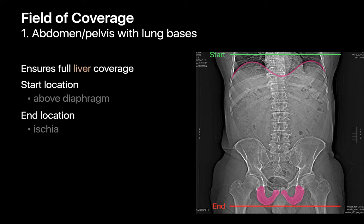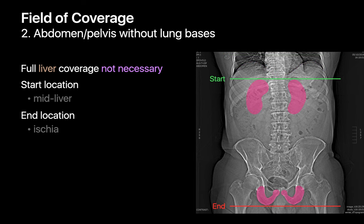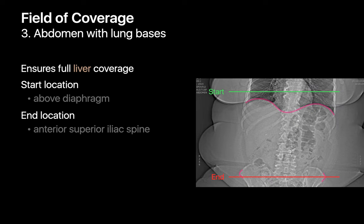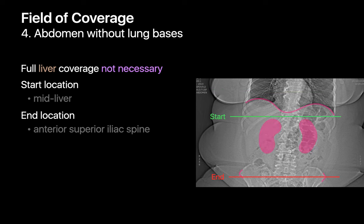Fields of coverage can vary. For abdominal pelvic CTs where the liver needs to be entirely imaged, the scan will need to begin just above the domes of the diaphragm and go all the way through to the ischiotuberosities of the bony pelvis. Sometimes the entire liver doesn't need to be imaged, such as in an abdominal pelvic CT for urinary tract calculi, and the scan may start from mid-liver instead, which can help reduce the radiation dose a patient receives.